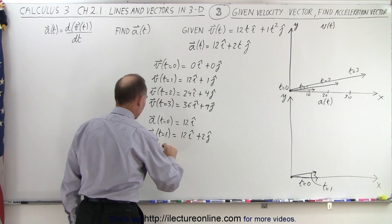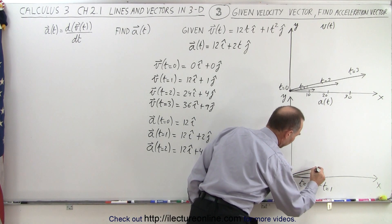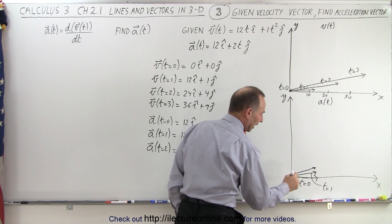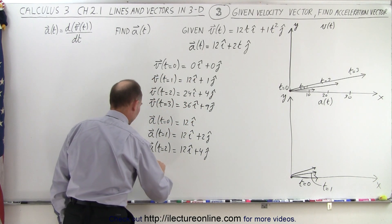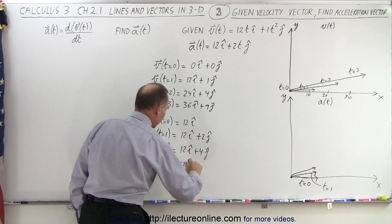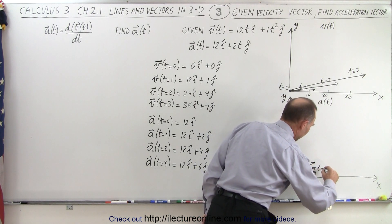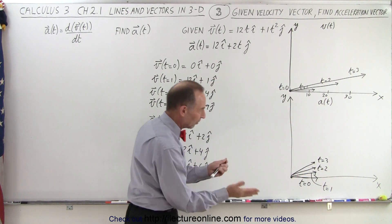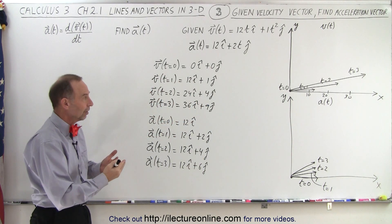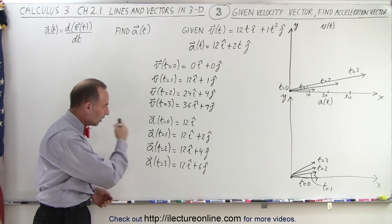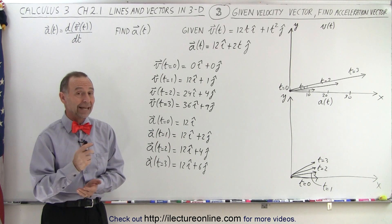Finding the acceleration for t equal to 2, we get 12 in the i direction plus 4 in the j direction. You can see the pattern: the x component is constant but the y component grows. The acceleration when t equals 3 is 12i plus 6j. So at t equals 2 and t equals 3 the acceleration slowly gains a larger component in the y direction while the x component remains constant. This gives you a good feel for what position, velocity, and acceleration vectors look like in two-dimensional space, which extrapolates to three dimensions as well.